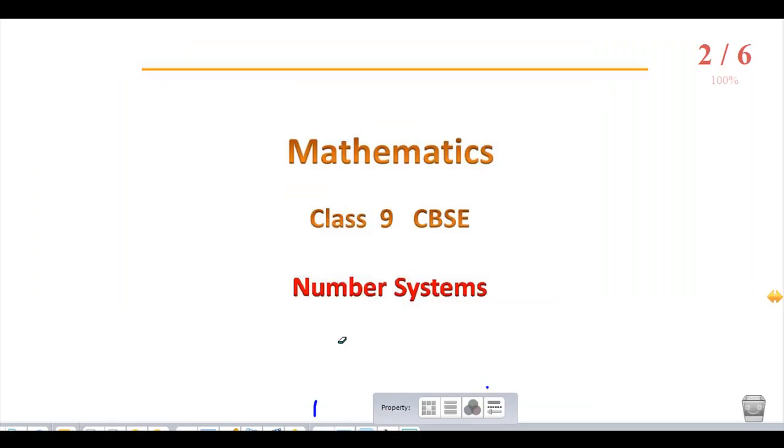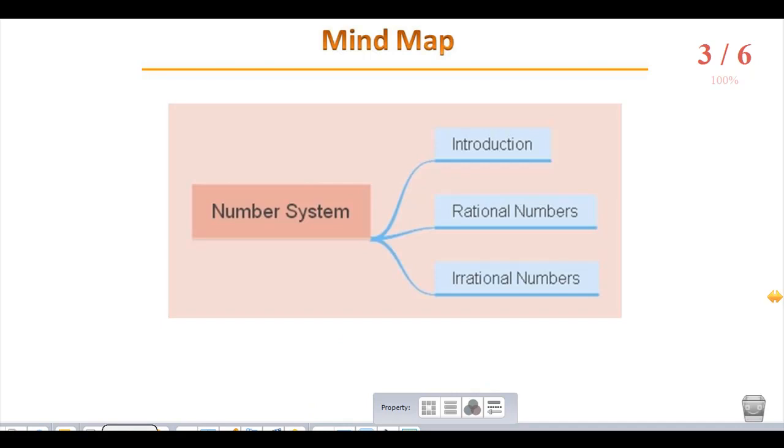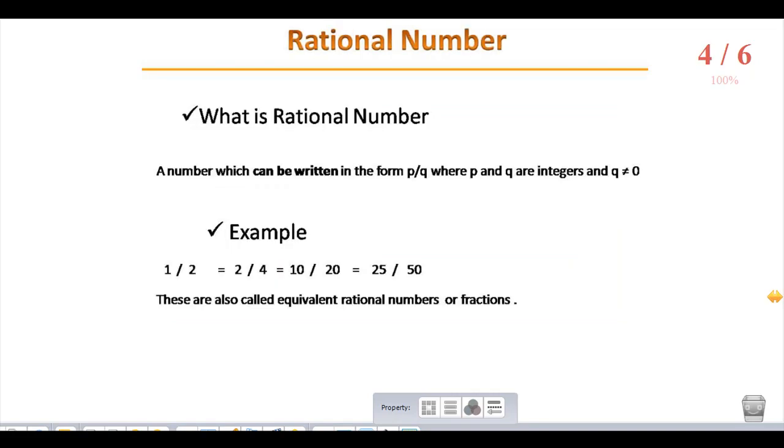Guys, welcome back. Today we deal with introduction and examples for rational numbers and examples for irrational numbers. Last class we discussed what is a rational number, so I'll repeat here: a number which can be written in the form p by q, where p and q are integers and q not equal to zero.